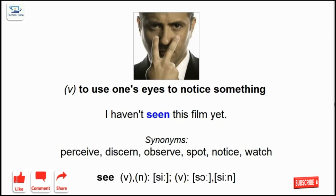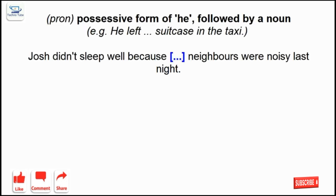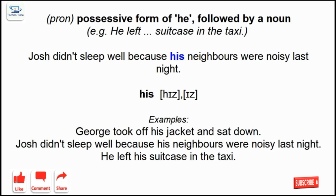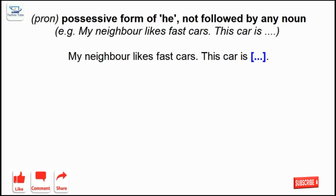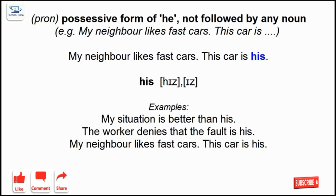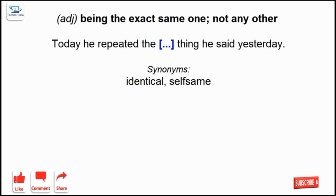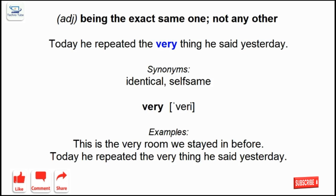See: to use one's eyes to notice something. His: possessive form of he, followed by a noun. Very: being the exact same one; not any other. Very: precisely as stated.